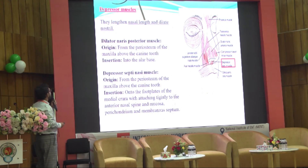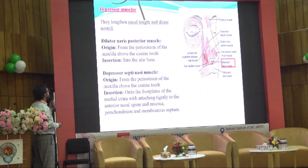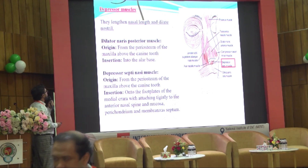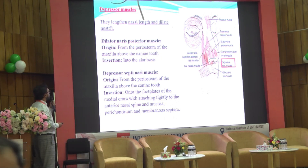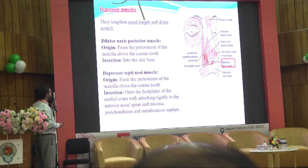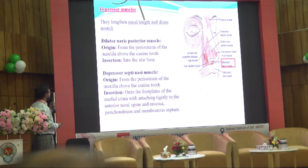The depressor muscles lengthen the nasal length and dilate the nostril, including the dilator naris posterior muscle and depressor septi nasae muscle.